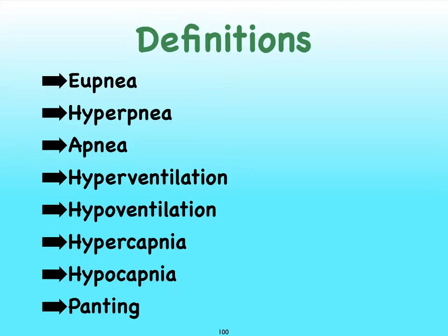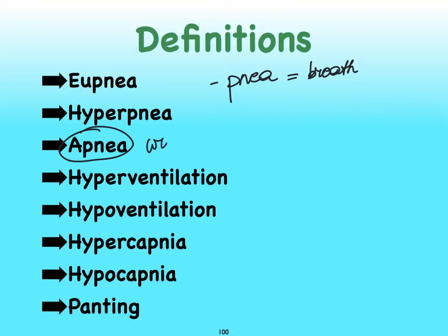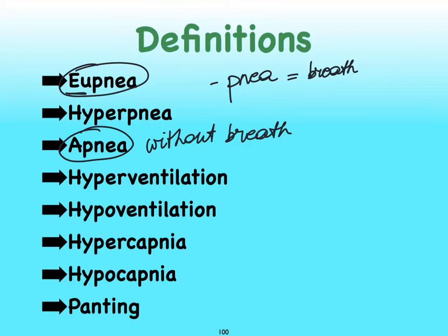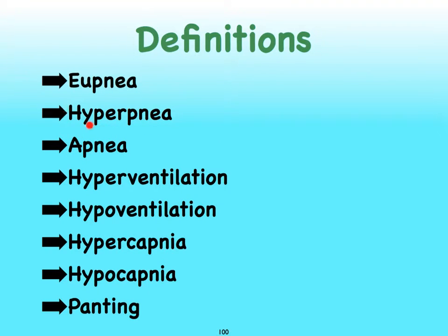Many of the terms that we'll come across have the root PNEA in them, and this always refers to breath. You've heard of people suffering from sleep apnea — apnea means without breath; people stop breathing, usually while sleeping. Eupnea refers to true breath, or normal breathing — think of the word eukaryote, which refers to a true nucleus. Hyperpnea refers to faster and deeper breathing.